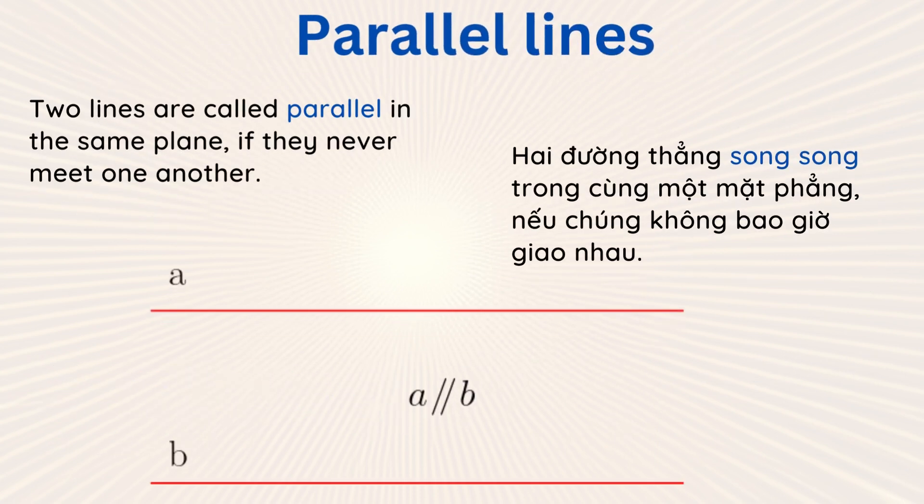Two lines are called parallel, in the same plane, if they never meet one another. In the picture, one has two parallel lines, A and B, denoted by A double slashes B.